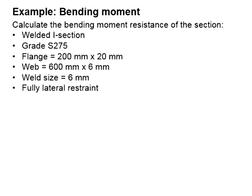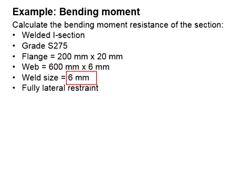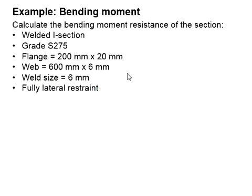Let us try an example to design the bending moment for a steel member. The question asks us to calculate the bending moment resistance of a section. The section is a welded I-section. The steel grade is 275. The flange is 200 mm x 20 mm, and the web is 600 x 6 mm. The weld size is 6 mm, and it is assumed that the member is fully laterally restrained.